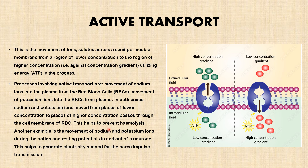Another example is the movement of sodium and potassium ions during the action and resting potential in and out of the neuron — this helps to generate the electricity needed for nerve impulse transmission. As you can see in this picture describing active transport, it is the movement of substances from low concentration to high concentration through the cell membrane. Energy is needed — it's like when you are riding a bike up a hill.